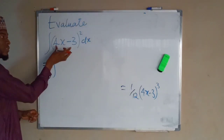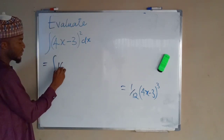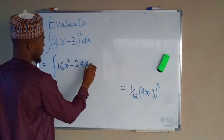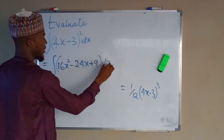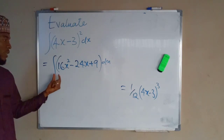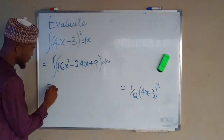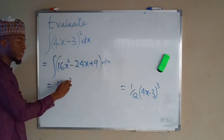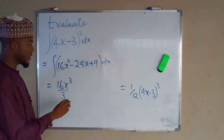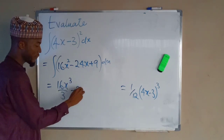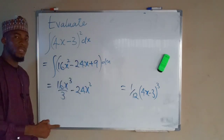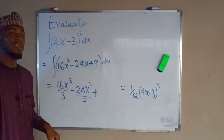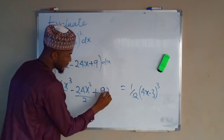The second method is by expansion of the bracket itself. Expanding (4x minus 3) to the power of 2 gives 16x squared minus 24x plus 9, all times dx. We take the integral of each term: for 16x squared, add 1 to the index to get 3 and divide by 3; for negative 24x, add 1 to get x squared and divide by 2; and the integral of the constant 9 is 9x.